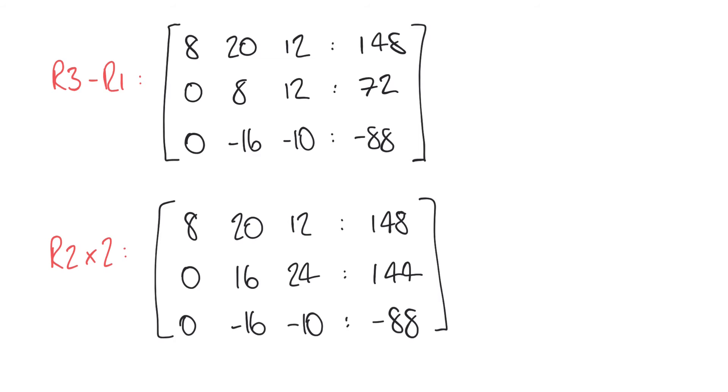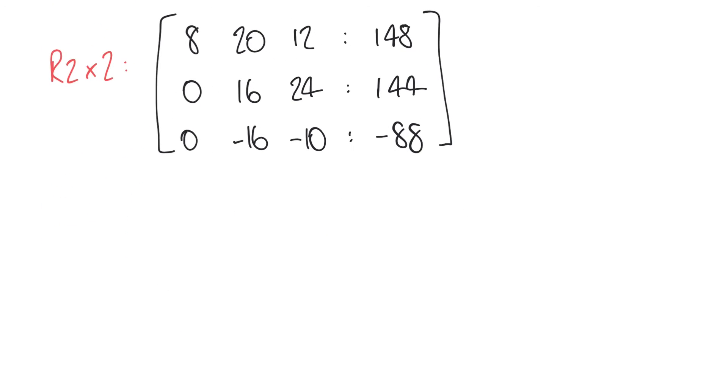Hopefully you can spot why I've done this because again I'm looking to get rid of this minus 16 and I've created a positive 16 here in the second row. And so now I could take row 3 and add the values from row 2 and so the third row becomes now 0.